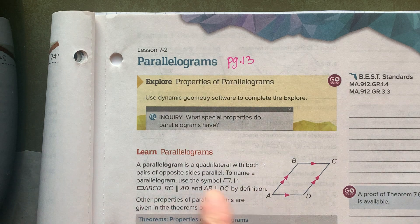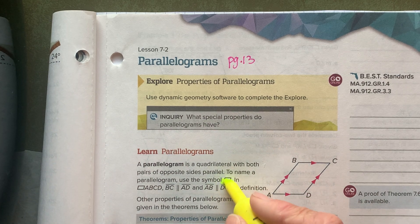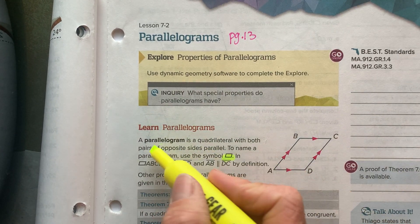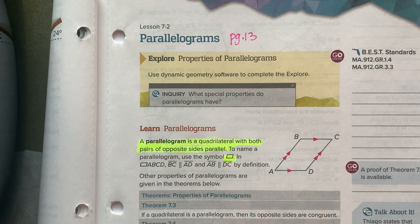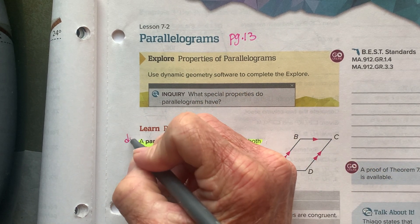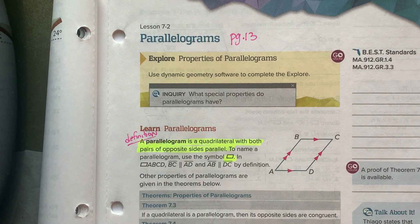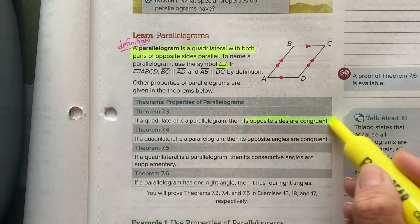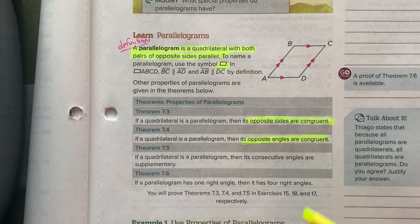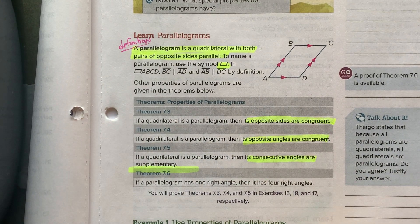Let's just hit the highlights. This is the symbol we're going to use to show that we have a parallelogram. By definition, it's a quadrilateral with both pairs of opposite sides that are parallel — that's just the definition of a parallelogram. And then these are the theorems: opposite sides are congruent, opposite angles are congruent, and consecutive angles will be supplementary to one another.